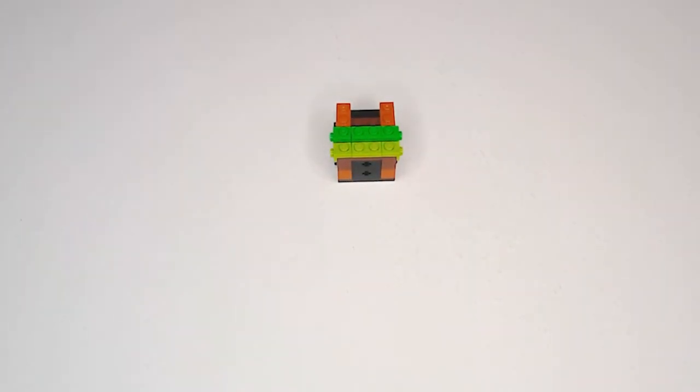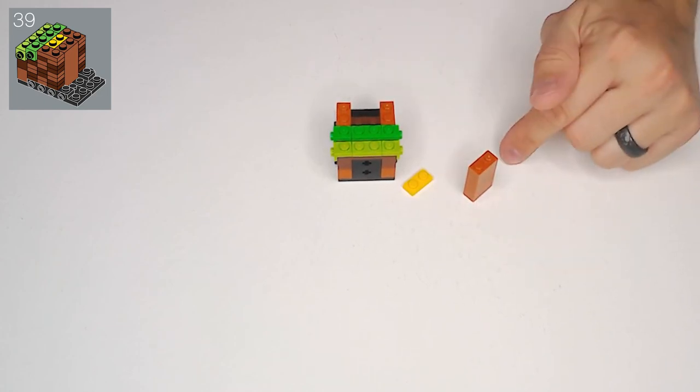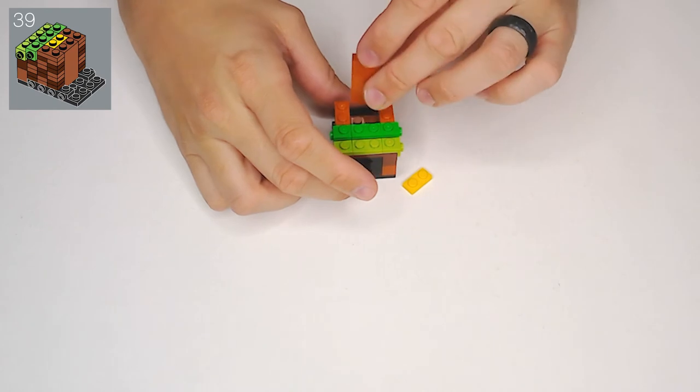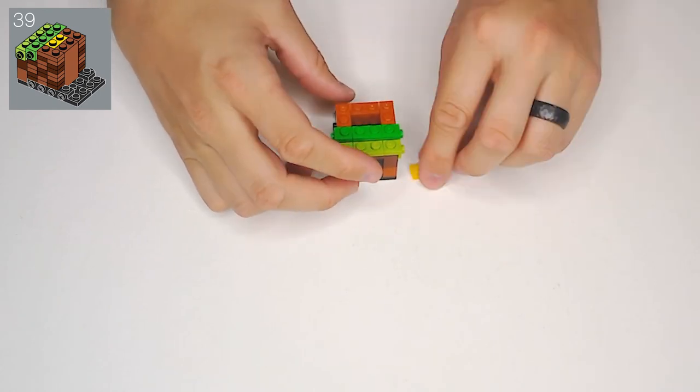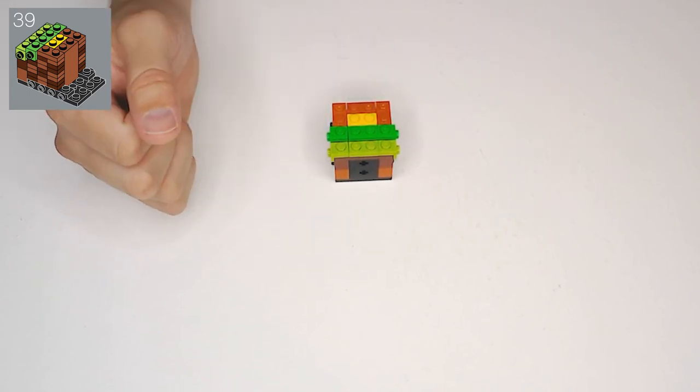Okay? Now, in 39, we need a yellow 1x2 plate. Then we also need one of these 1x2 blocks in the brown. That is going to slide down into that gap. Then this will fit nicely into that little divot right there. And then, step 40.